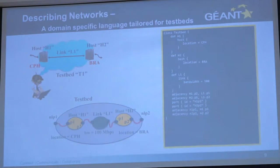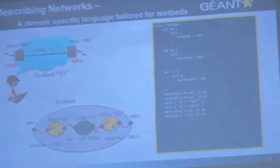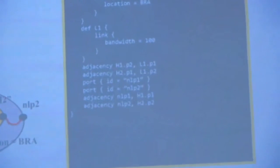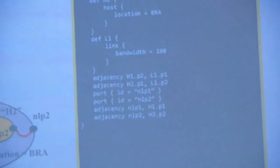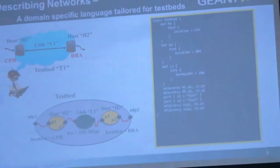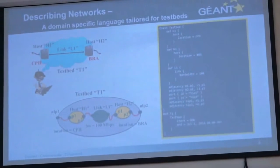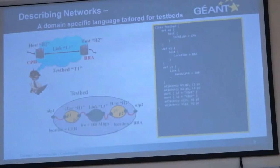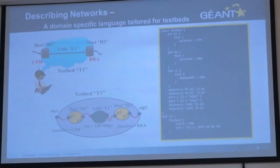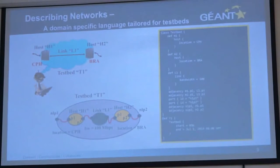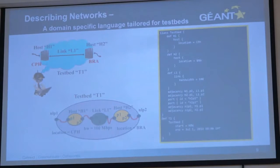This bubble diagram is the logical concept of how you should think of your testbed. The text is an example of the domain-specific language that describes it — this is what's exchanged between the user agent and the provider. Then the last thing we do is instantiate the testbed. Up until that point we've just defined the template, the class. Here is where we actually instantiate it, saying we'd like to run it now until, for example, December 1st, 2025.